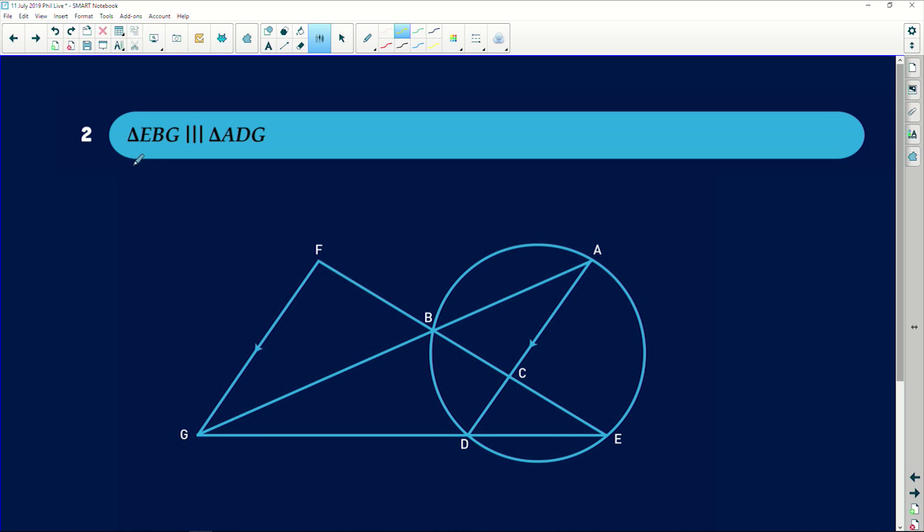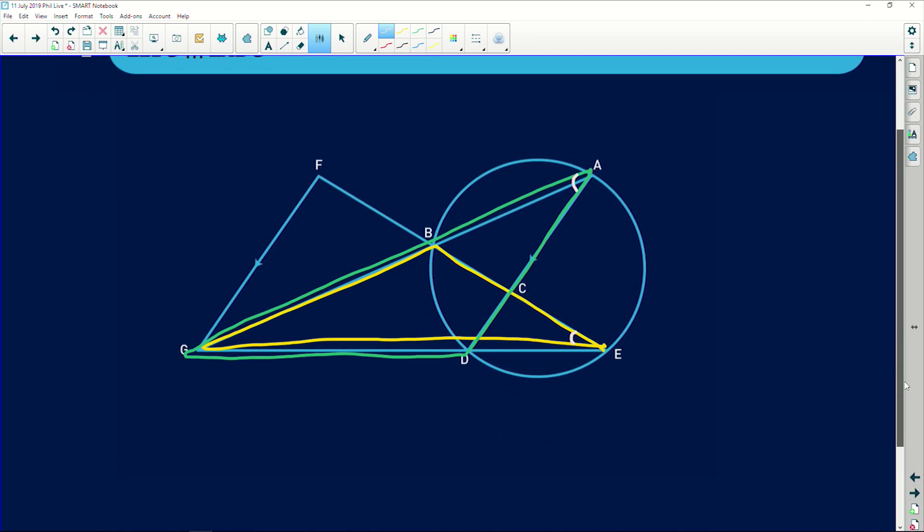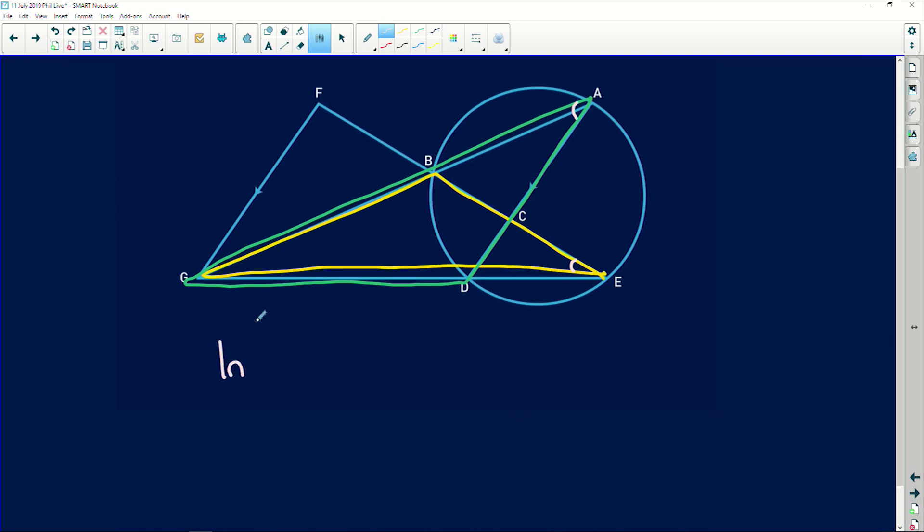Prove with reasons that triangle EBG, which is this triangle here, EBG, is similar to triangle ADG, which is this triangle over here. So remember, we said immediately that angle A is equal to angle E. So let's write that down. When you want to lay out your similarity questions, guys, say in triangle ADG, which is the one triangle we're working with, and triangle EBG, which is that yellow triangle that we outlined. But remember, when you lay these out, try to label them with corresponding vertices.